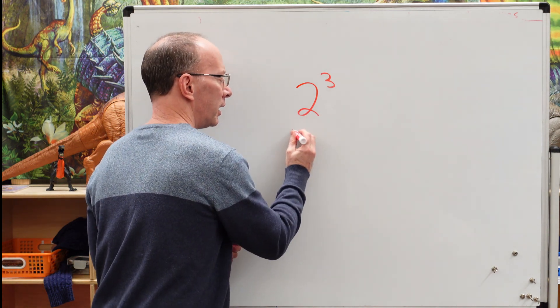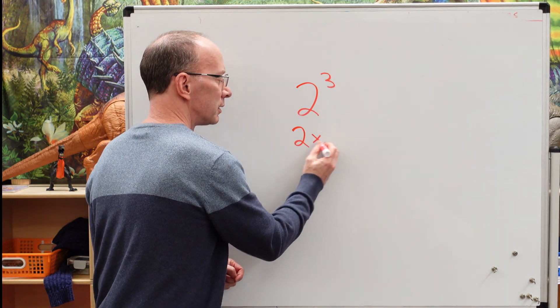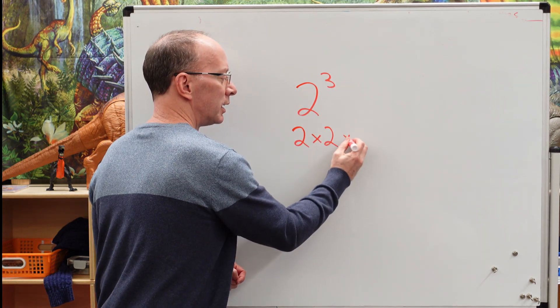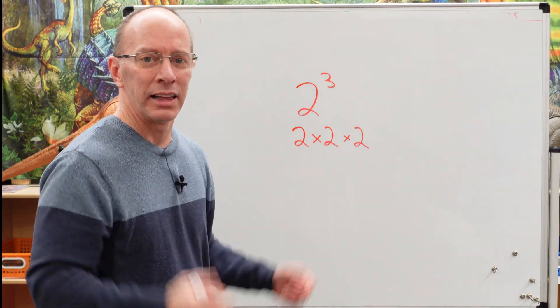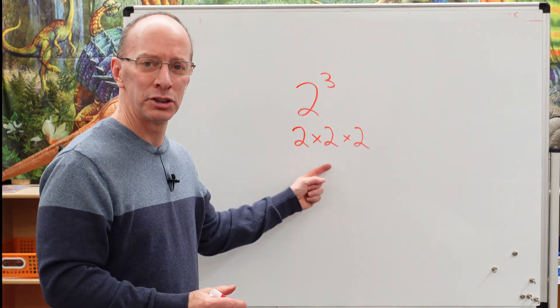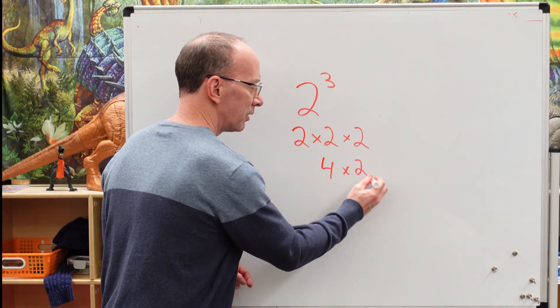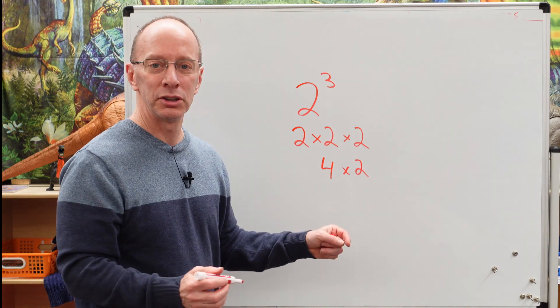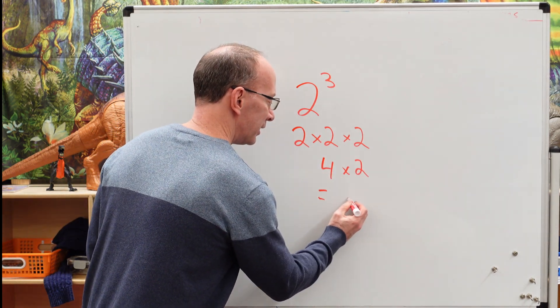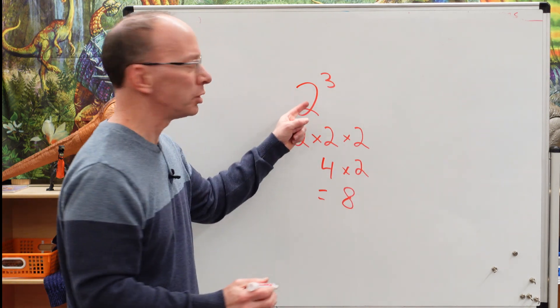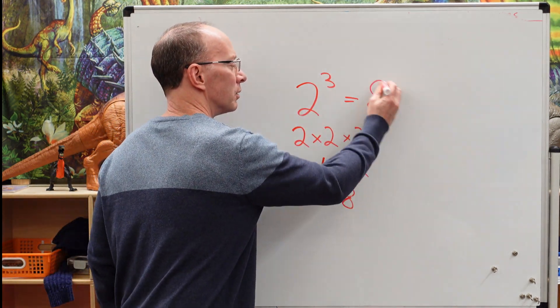so I take two and I write it three times. Two times two times two. Pretty simple, isn't it? And then you start multiplying. Two times two is four. Four. And then you got to multiply this other two here. Four times two is eight. Ocho. So two to the third power equals eight.